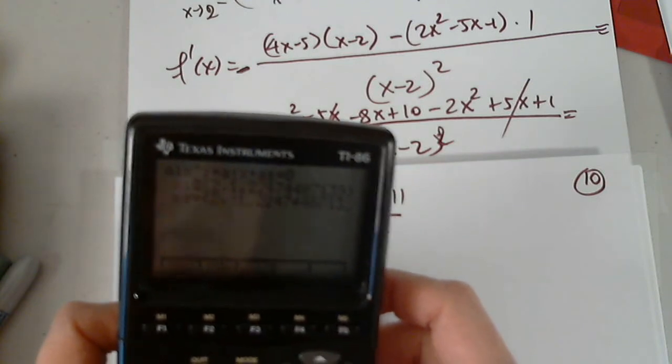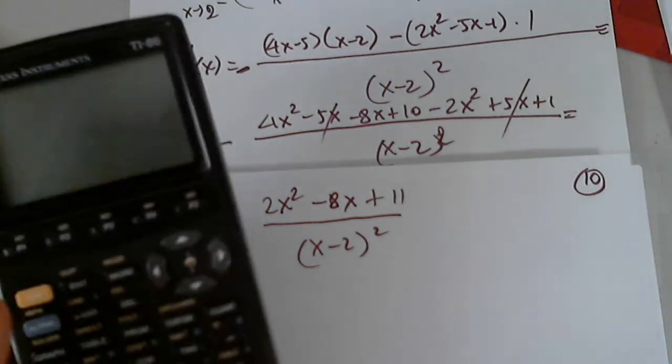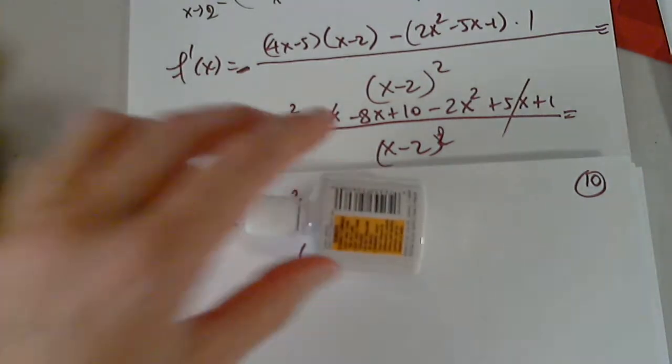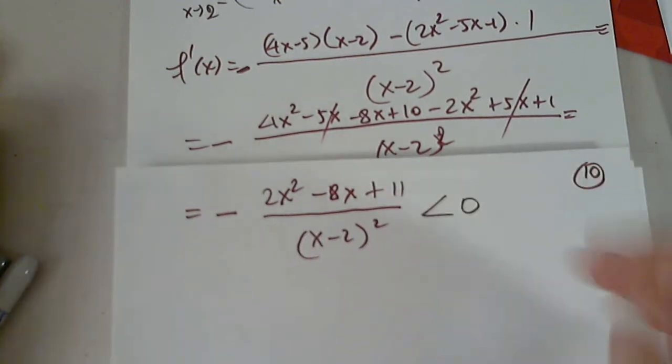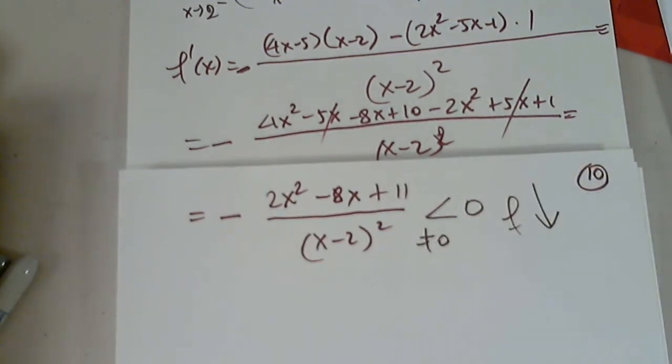Really, really, imaginary solutions. Nice. Wonderful. So this is all is positive then, with minus in front. Always negative, never zero, the function is always decreasing.